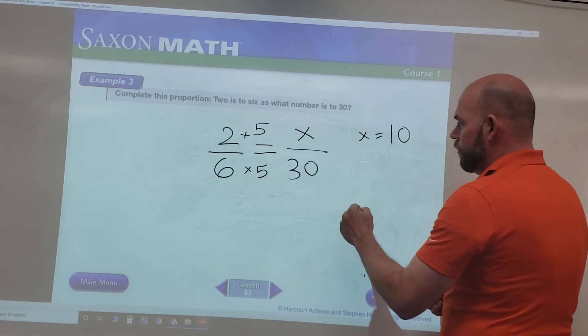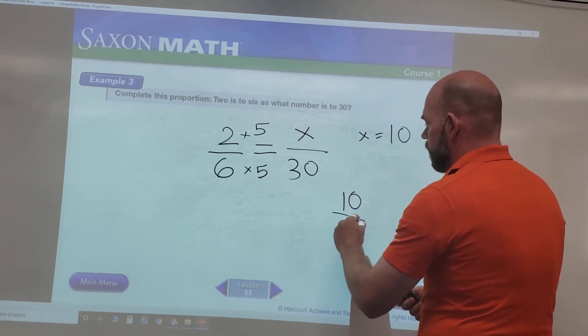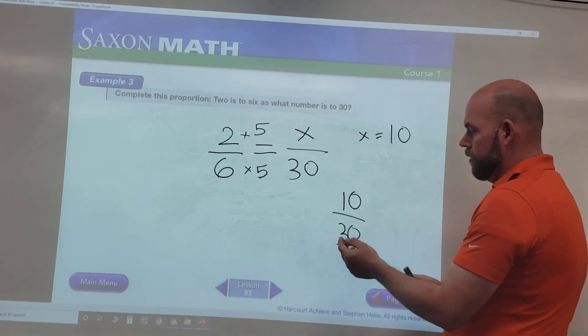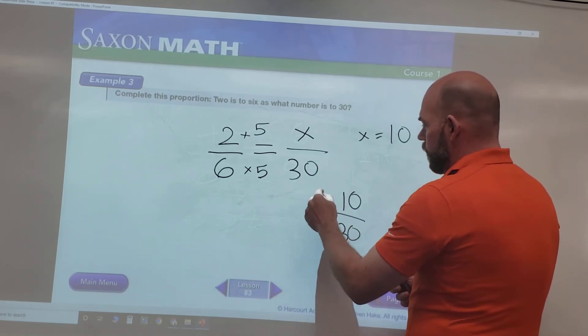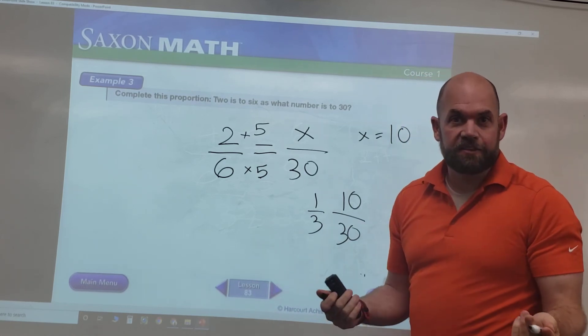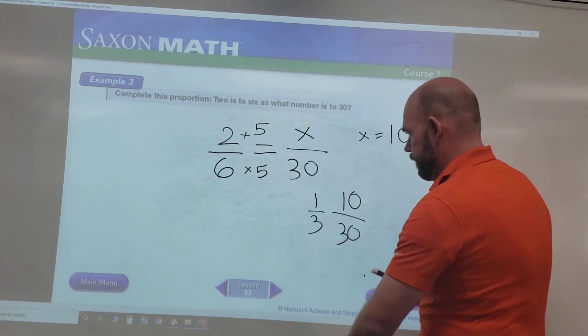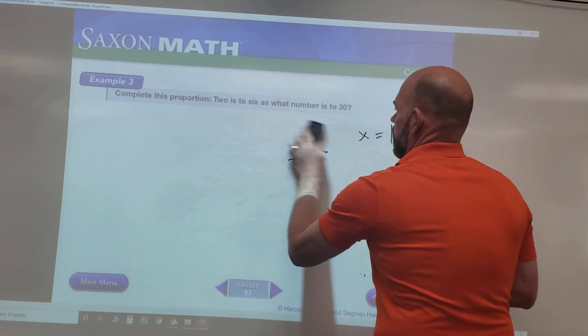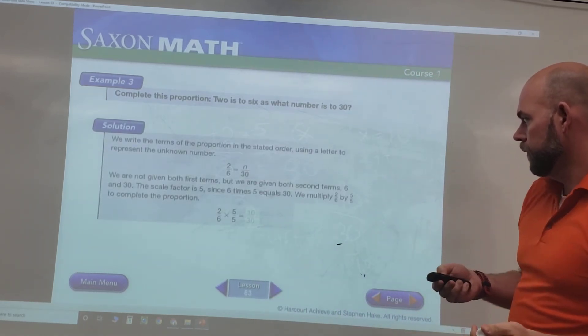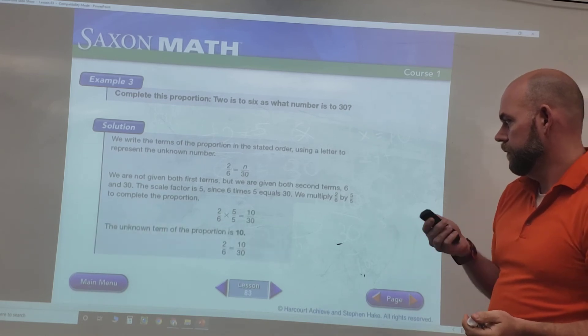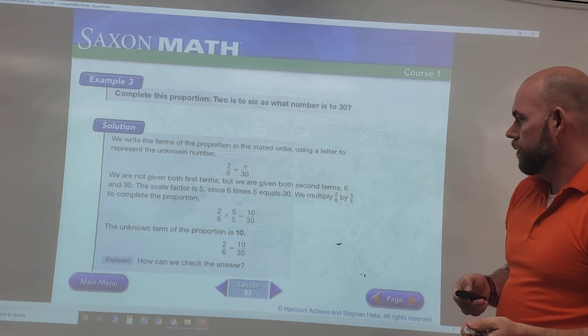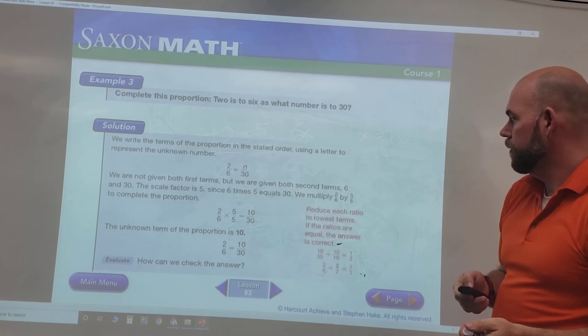Two times five equals ten, and so X would equal ten. So our ratio here is ten is to thirty, and we have to see if that checks out. If we reduce ten to thirty, that's going to reduce to one-third. Does two-six reduce to one-third? Yes, so it's an equal proportion.